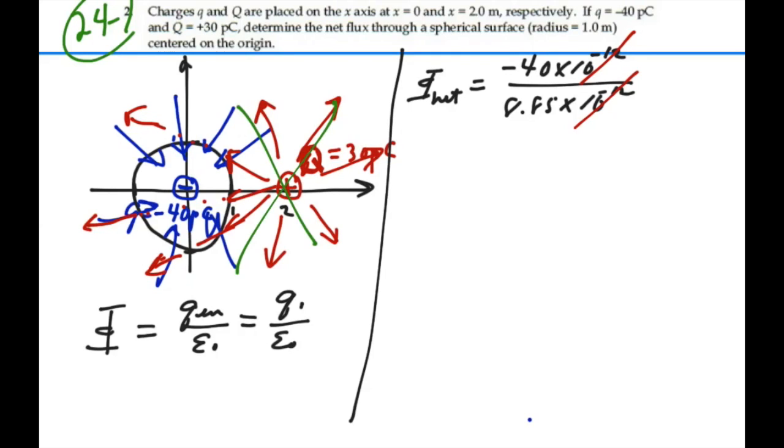That's going to be negative 4.52 Newton-meter squared per coulomb. So that is the net flux through the sphere because there is no contribution from the external charge. There's only a contribution from the internal charge, the charge enclosed by the surface.